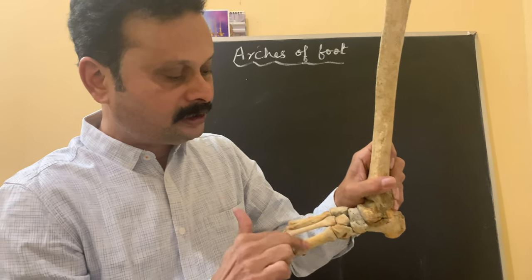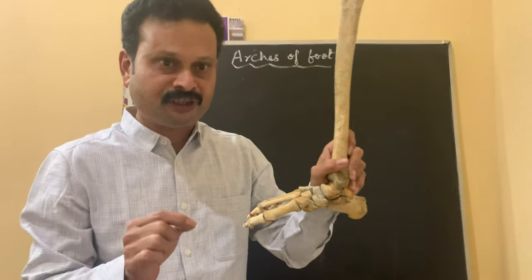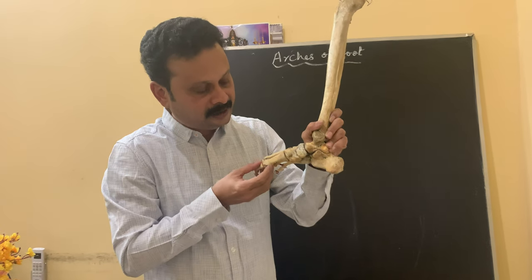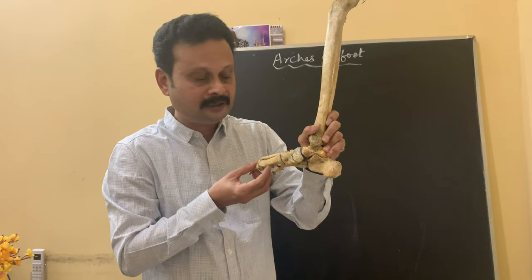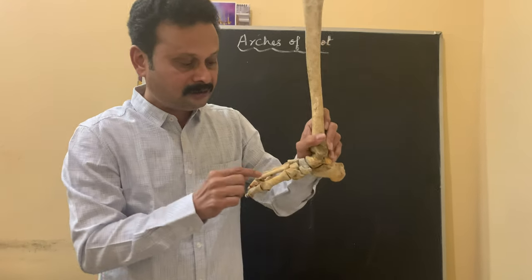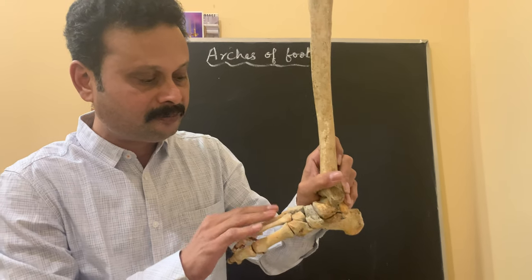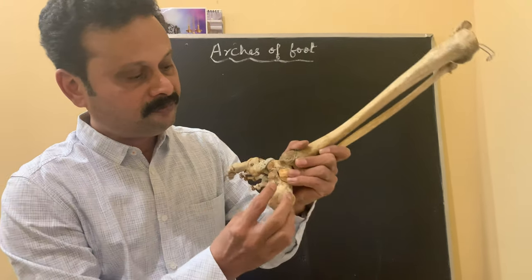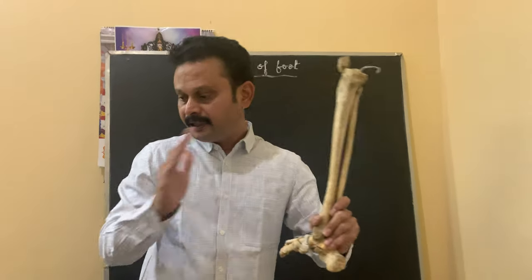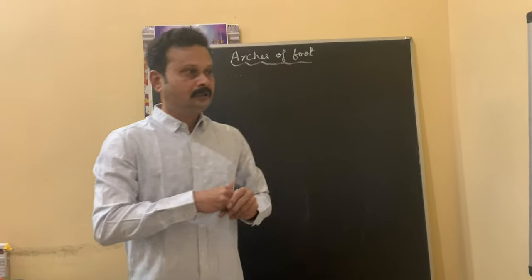The remaining 15 kg in each foot is received by the heads of the 5 metatarsal bones, each head bearing a weight of 2.5 kg. With the first metatarsal head, since it contains 2 sesamoid bones underneath it, it receives double the weight — that means it transmits 5 kg. So 5, 2.5, 2.5, 2.5, 2.5 — total 15 kg is received by this portion of the foot, and 15 kg by the calcaneum in each foot. Thus it helps in proportional weight distribution onto the ground.